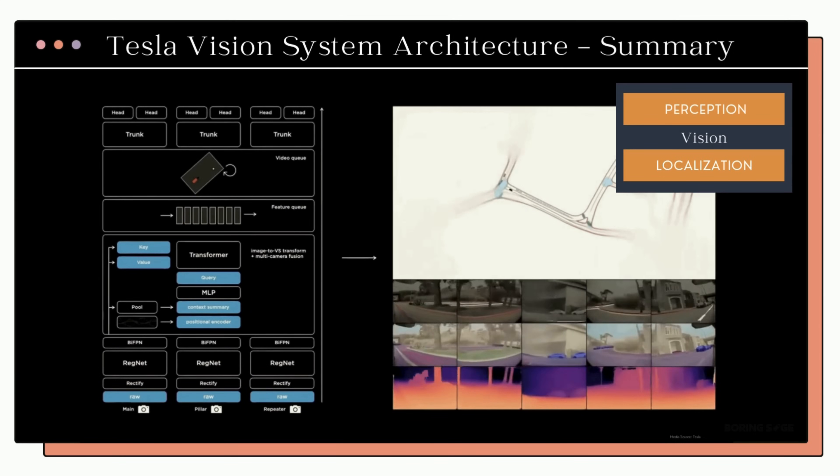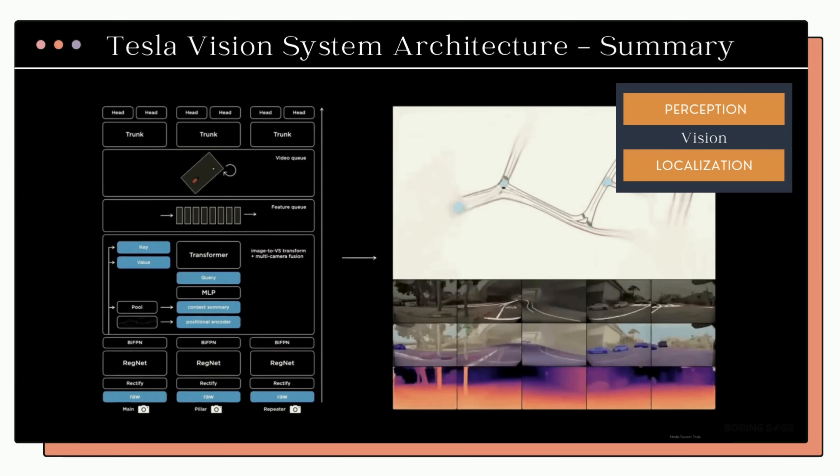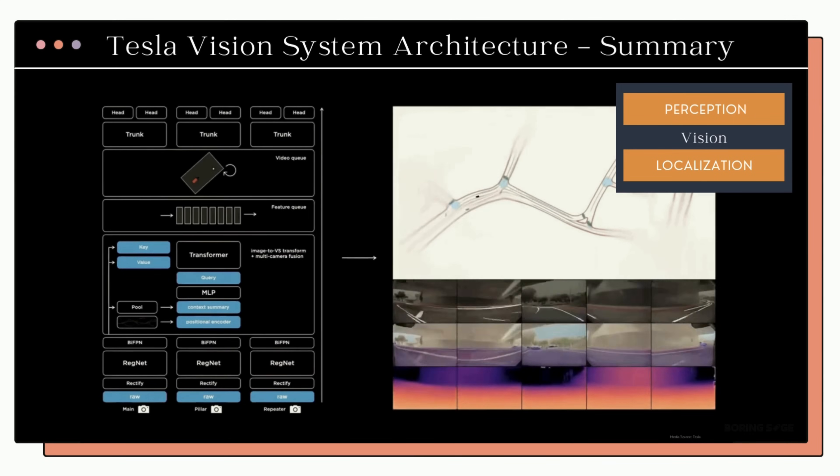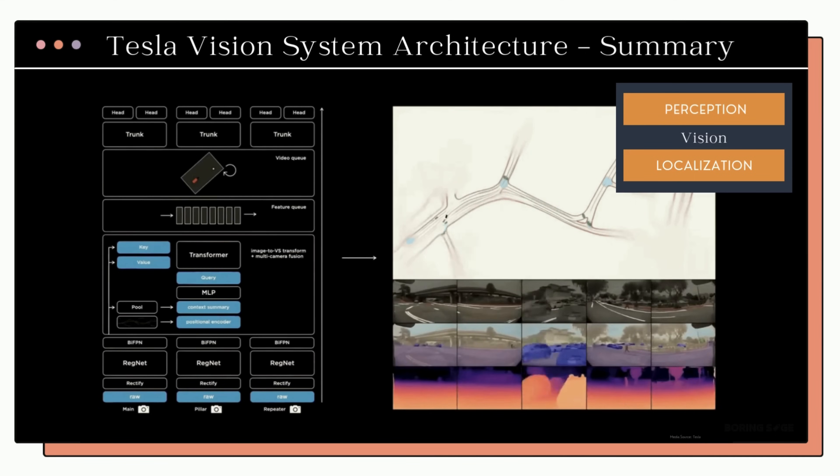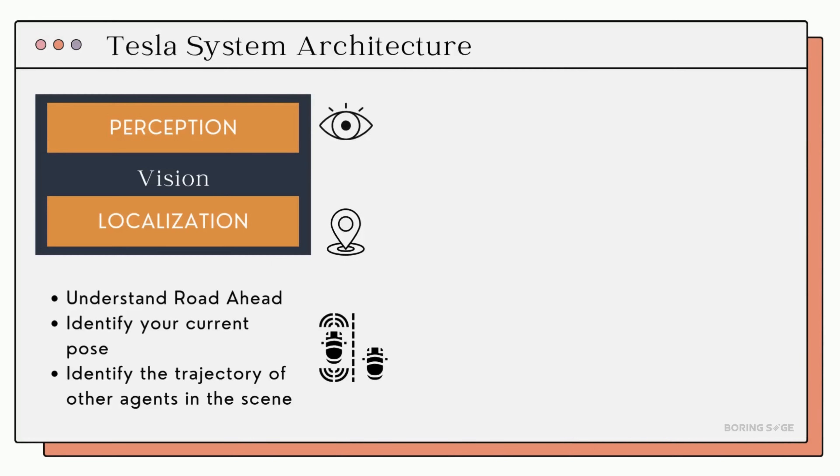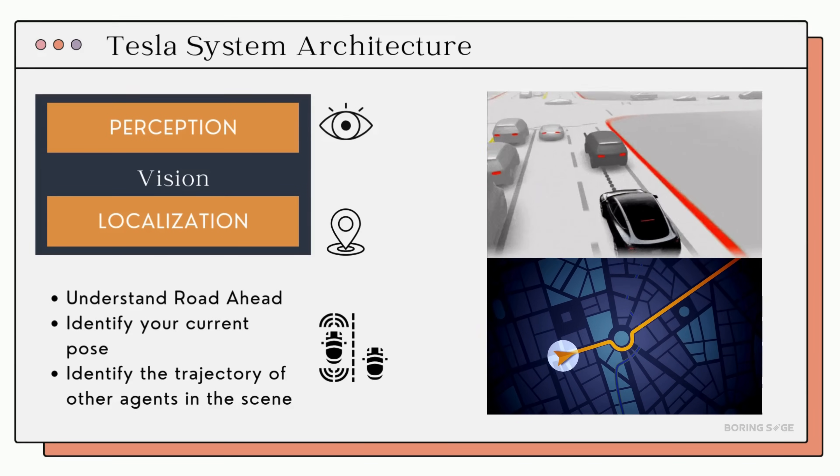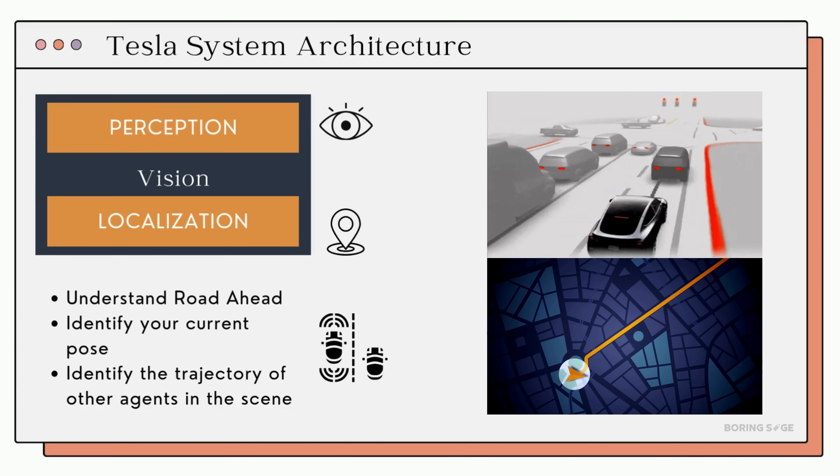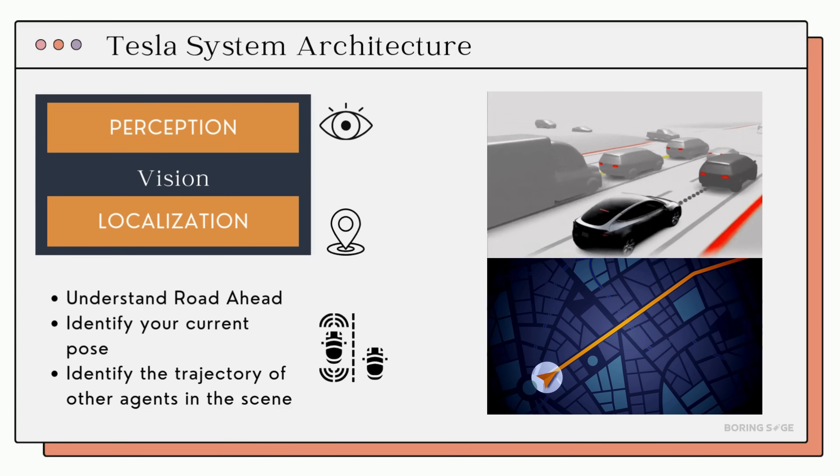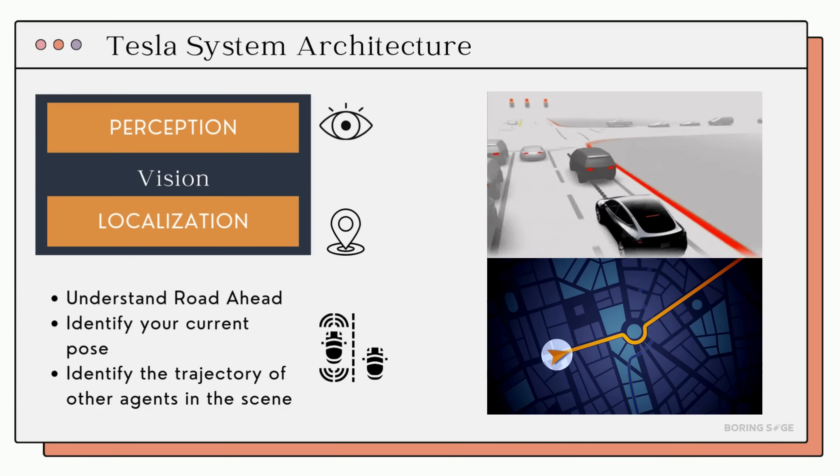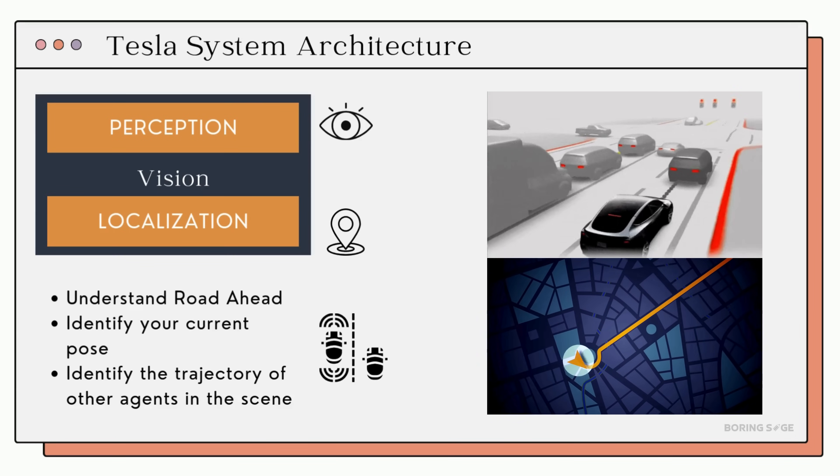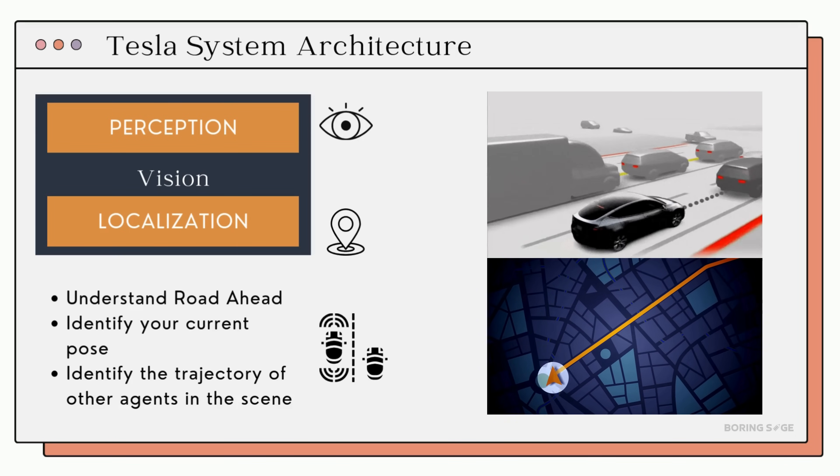This output is Tesla's combined output of the perception and localization module, also known as the vision system, which allows the car to not only understand where it is but also predict the trajectories of other objects in the environment. And this essentially is Tesla's vision system. So the Tesla vision system combines both the perception and localization functions, allowing it to understand the surroundings and the trajectories of other agents in the scene along with its own position.